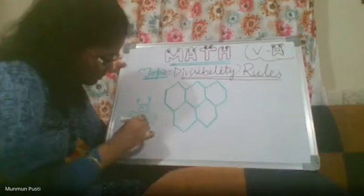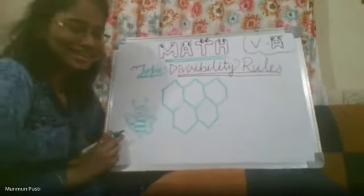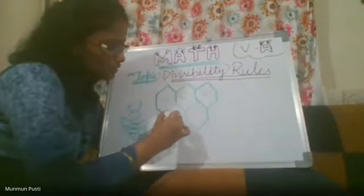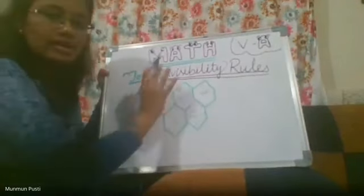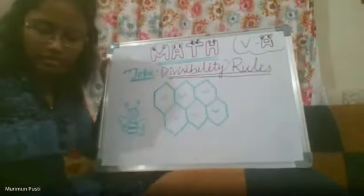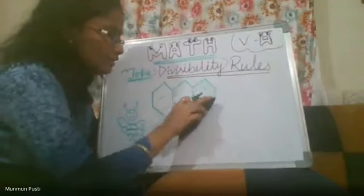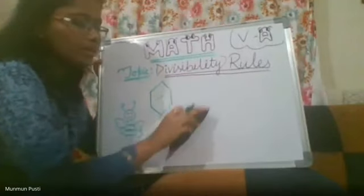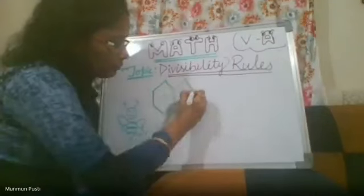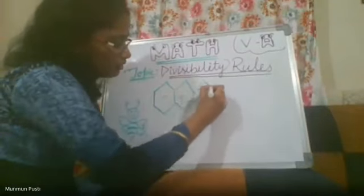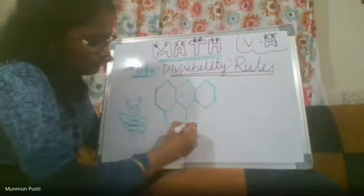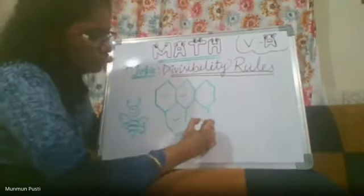This is a honeybee. As you can see, this is one, two, three, four, and five — these five make the honeycomb, just like this. This is a six-sided shape. If I remove them one by one, it will not make any honeycomb.